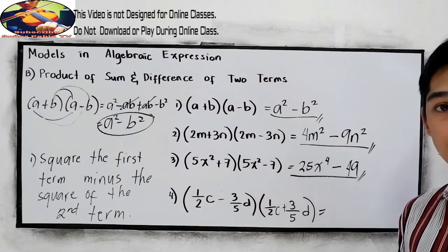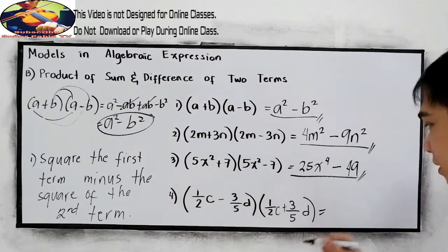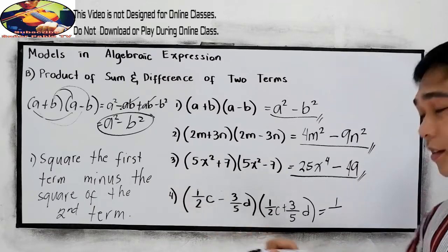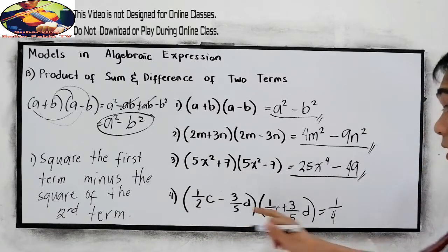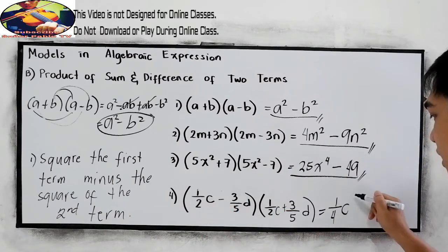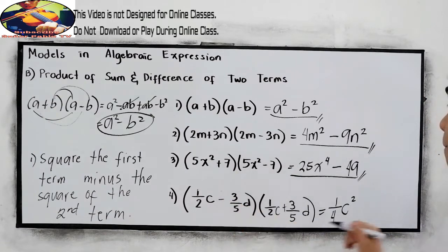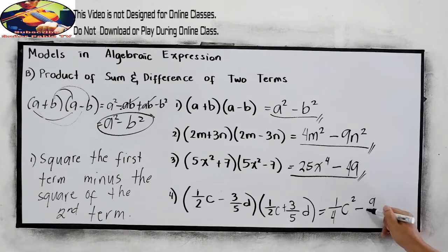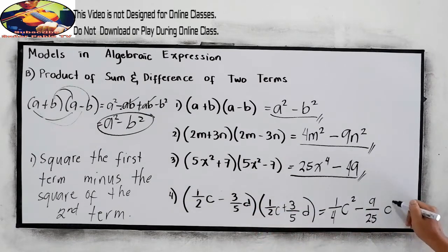Shortcut, square the first term. So 1 squared, which is 1 over 2 squared, which is 4. Then we have variable C squared, minus 3 squared, that is 9, over 5 squared, which is 5 times 5, 25. Then we have D squared. This will be the product.